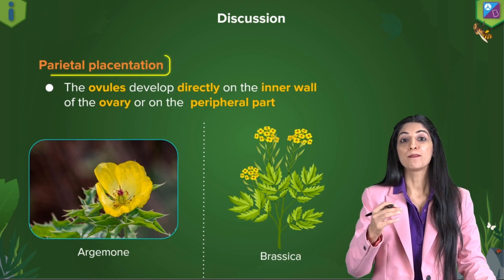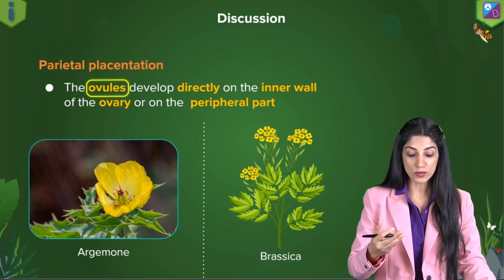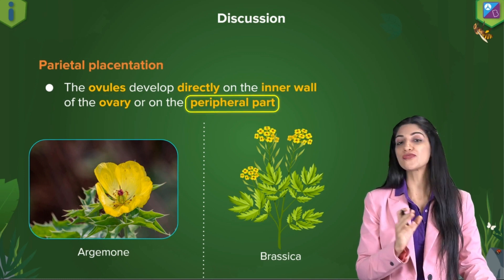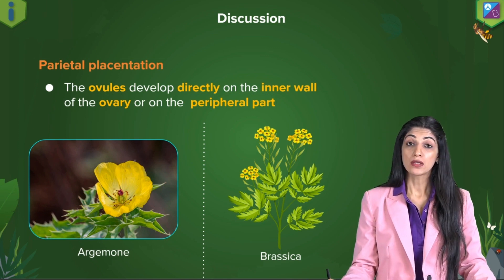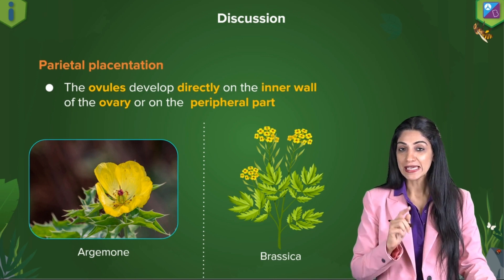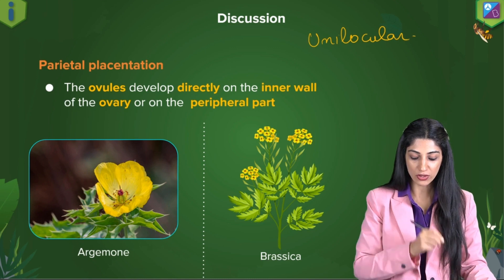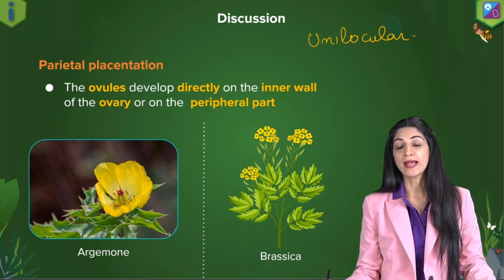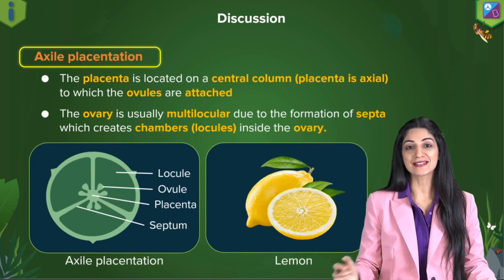Next, we talk about parietal placentation. Parietal placentation is when ovules develop on the periphery of the ovary — the peripheral part, the sides of the ovary. Here also the ovary has a single chamber; it is unilocular. The classic examples are Brassica and Argemone.